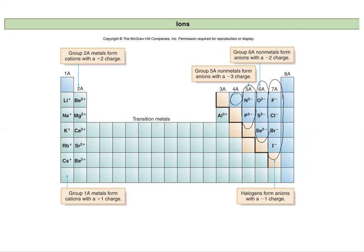Group four could gain four or lose four. Typically it doesn't form, or carbon doesn't form ionic compounds. And again, for our metals, we're looking at as cations and our non-metals, we're looking at as anions.